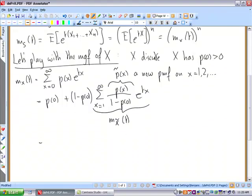So we can rewrite this as q plus p times this mgf. Here we define q as p of zero.